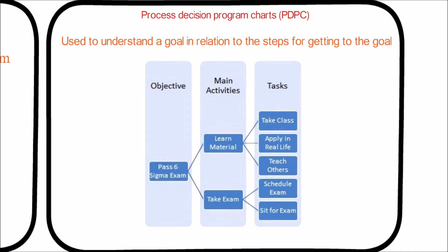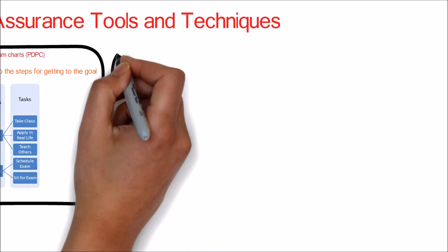Let's take the example of passing the Six Sigma exam, which is the goal. Then it is split into two main tasks: learn material and take exam. Each of these tasks is then decomposed to the required steps.